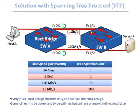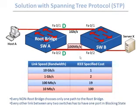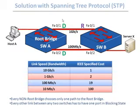Every non-root bridge chooses the path with the lowest cost to the root bridge, and the port on that path is called the root port. In our case, switch B has two paths: through F01 at 1 Gbps with cost 2, and through F02 at 100 Mbps with cost 19. F01 wins because it has lower cost, making it the root port. This port, like designated forwarding ports, is open to send and receive traffic.